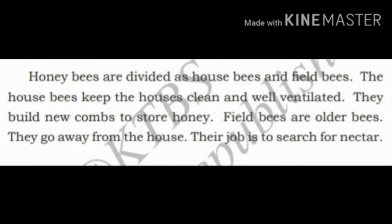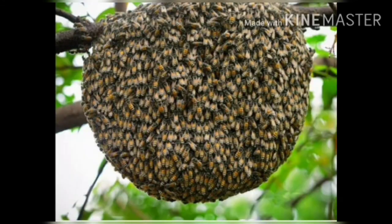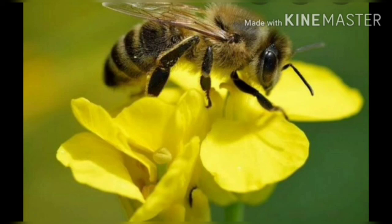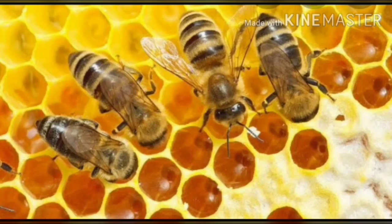Honey bees are divided into house bees and field bees. There is an excellent example of division of labor among honey bees. House bees keep the hive clean and well ventilated and build new combs to store honey. Field bees are older bees — their job is to go away from the hive and search for nectar. They collect nectar and store it in the honeycomb.